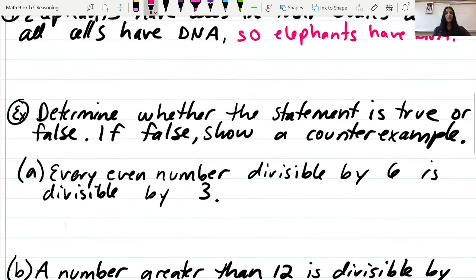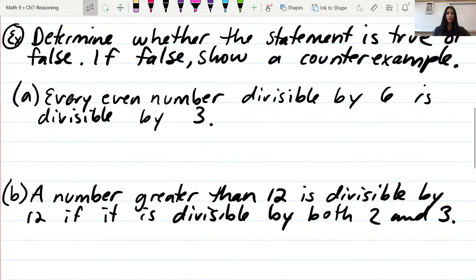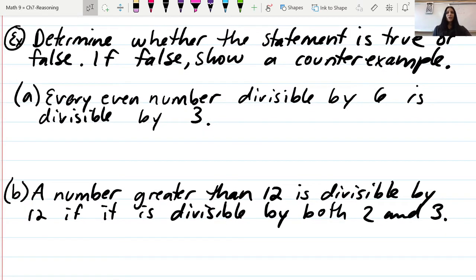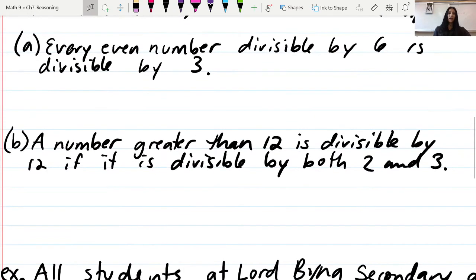Shifting gears a little bit: determine whether the statement is true or false, and if it's false, show a counterexample. Number eight: Every even number divisible by six is divisible by three.